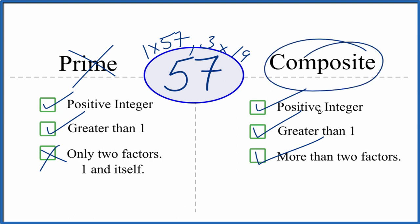So 57 is a composite number. This is Dr. B looking at whether the number 57 is prime or composite. It's composite. Thanks for watching.